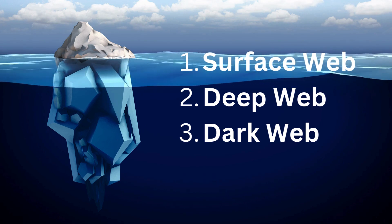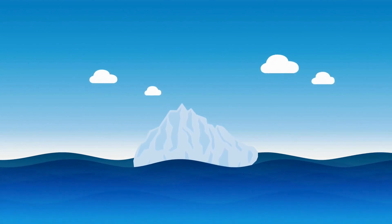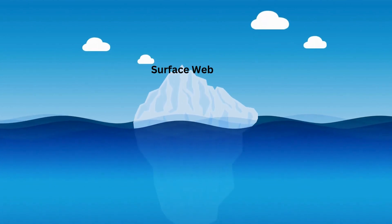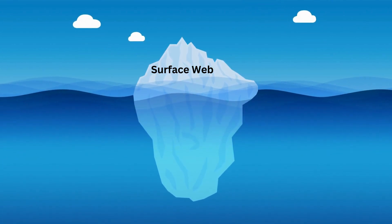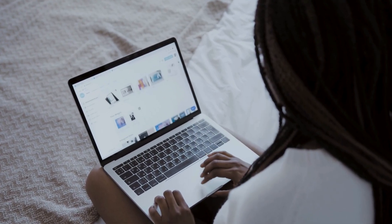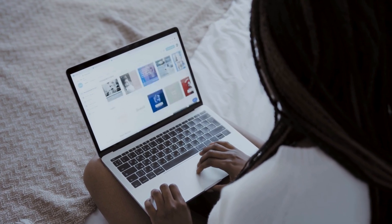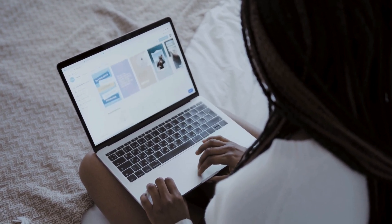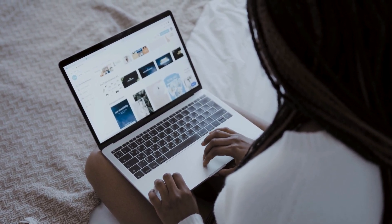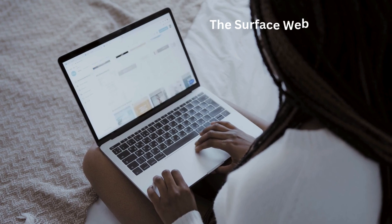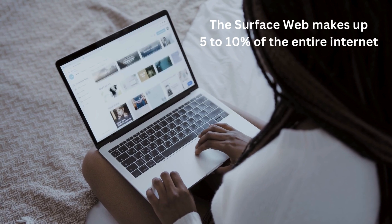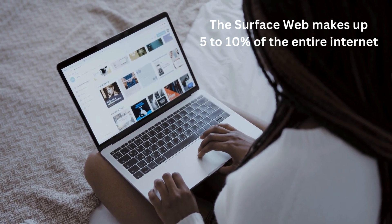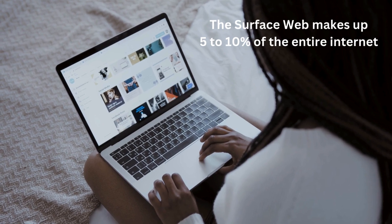Let's start with the surface web. As the name suggests, the visible part of the iceberg represents the surface web. It includes everything easily accessible through search engines like Google, Bing, and Yahoo — websites like Wikipedia, news articles, social media pages, YouTube, and online stores. The surface web makes up only about 5 to 10% of the entire internet, meaning the majority of the web lies beneath the surface, unseen and unreachable through normal search engines.